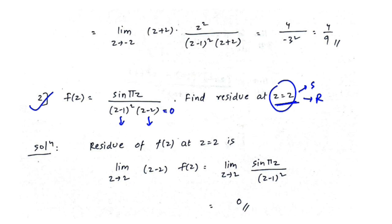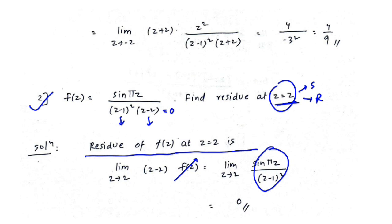Using the simple pole formula, the residue of f of z at z equals 2 is: limit as z tends to 2 of (z minus 2) into f of z. After cancellation, we get limit as z tends to 2 of sin(pi z) upon (z minus 1) squared. Substituting z equals 2 gives sin(2 pi) upon 1 squared, which equals 0, since sin(2 pi) equals 0.